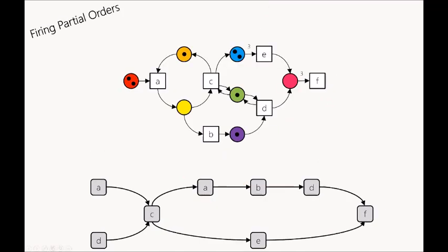This is the main contribution of my paper. We present definitions, proofs, and an algorithm for how to fire partial orders in a Petri net. We just brute-force fire or execute the partial order without looking for paths and without redistributing tokens, and then we see how far we can get with it.